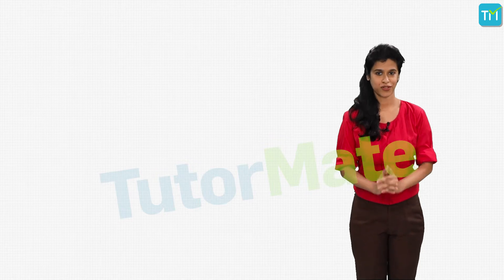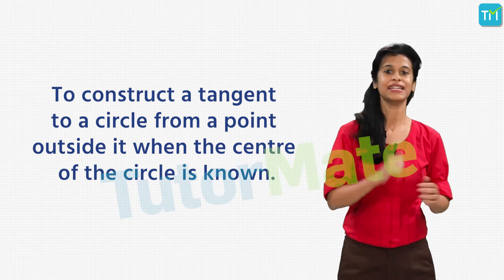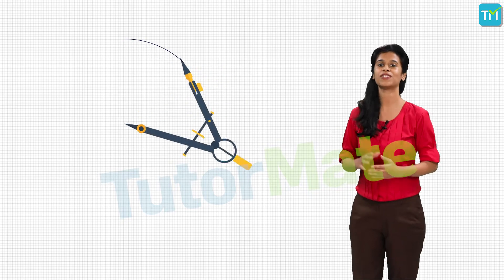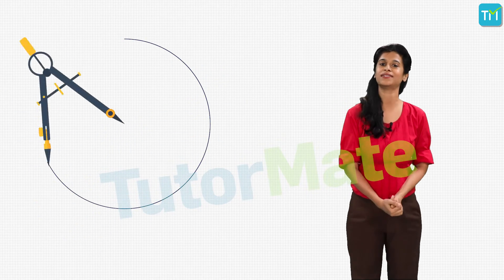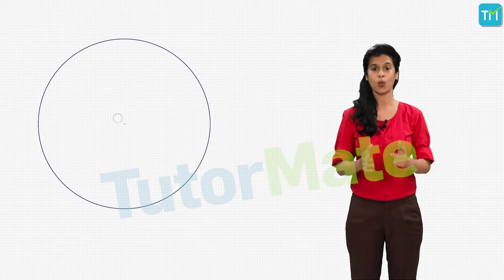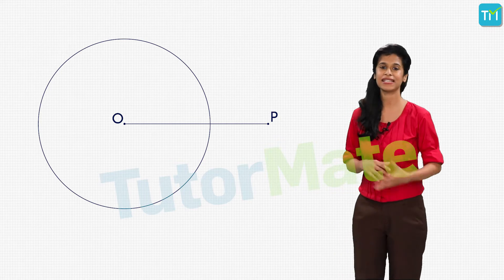Let us now try to construct a tangent to a circle from a point outside it when the center of the circle is known. We start with our trusted compass and draw a circle with radius 6 centimeters and name its center O. Next, we draw the segment OP of length 10 centimeters in any direction.